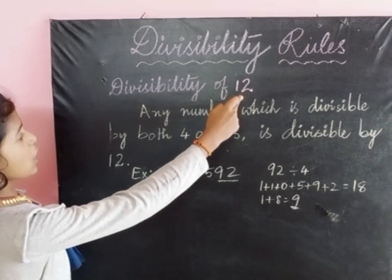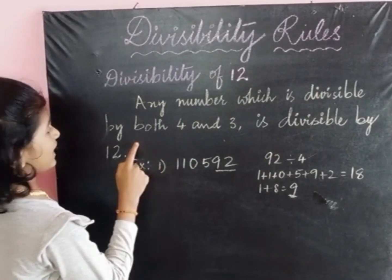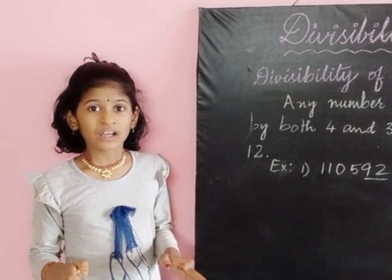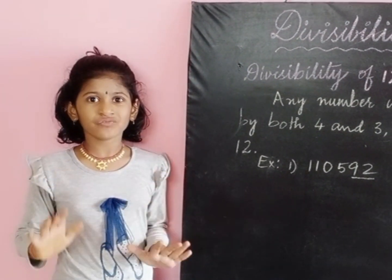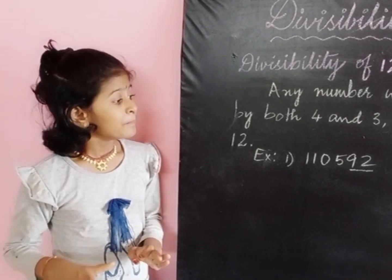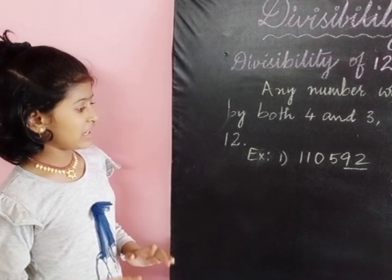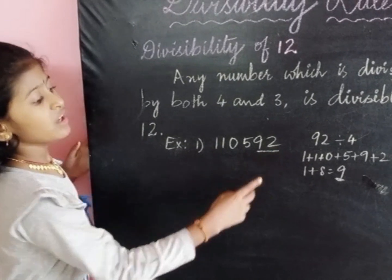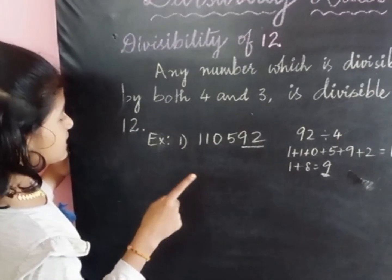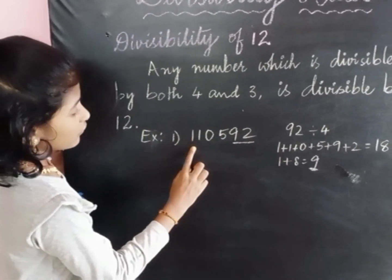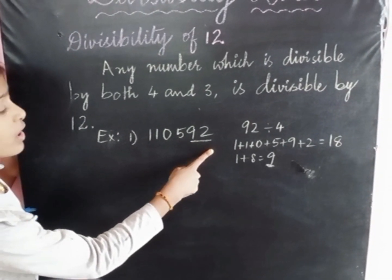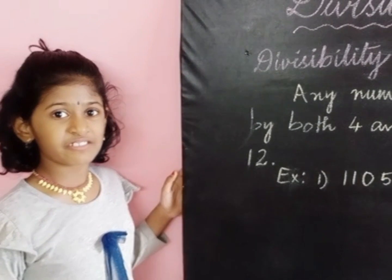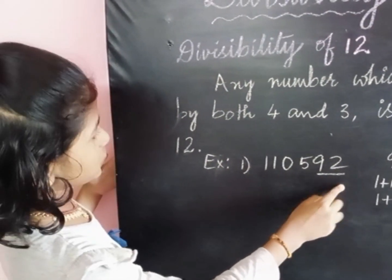Let us now know about divisibility of 12. Any number which is divisible by both 4 and 3 is divisible by 12. For example, 110592 — the last two digits, 92, are divisible by 4. Then we check divisibility by 3: 1 plus 1 plus 0 plus 5 plus 9 plus 2 gives us 18, and 1 plus 8 equals 9, which is divisible by 3. So 110592 is divisible by 12.